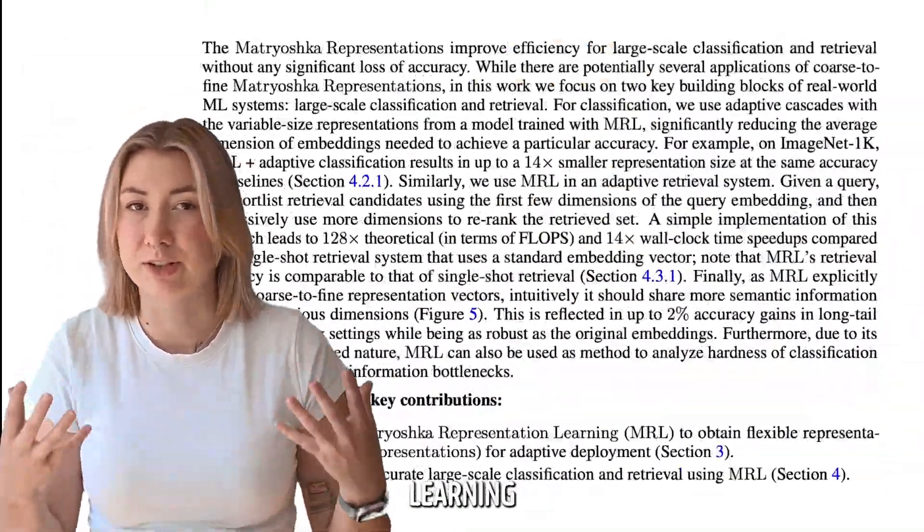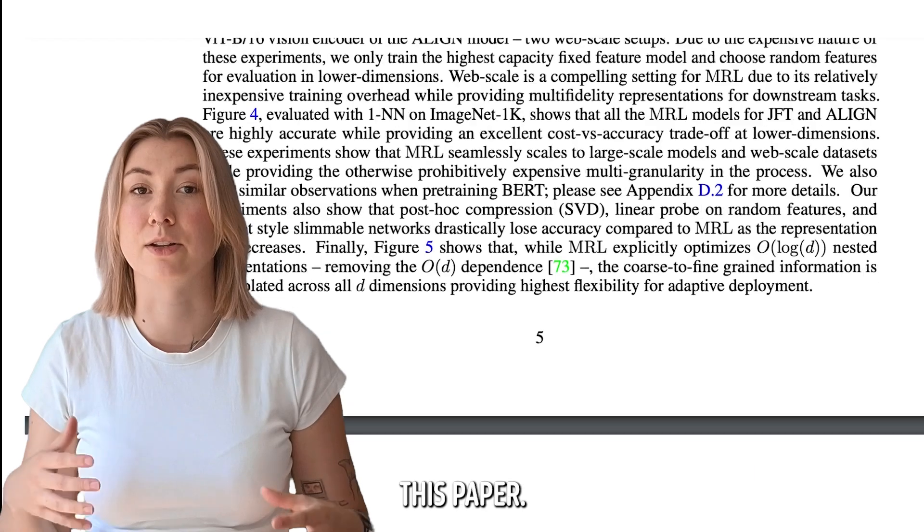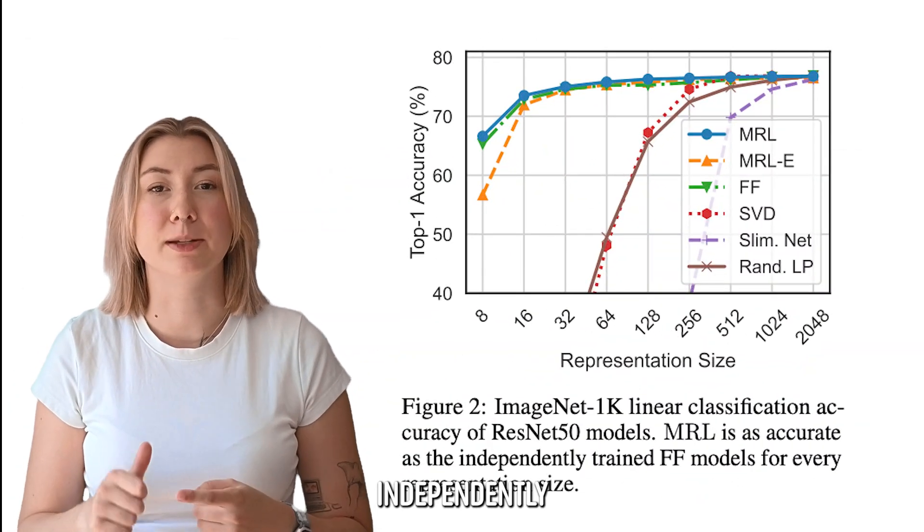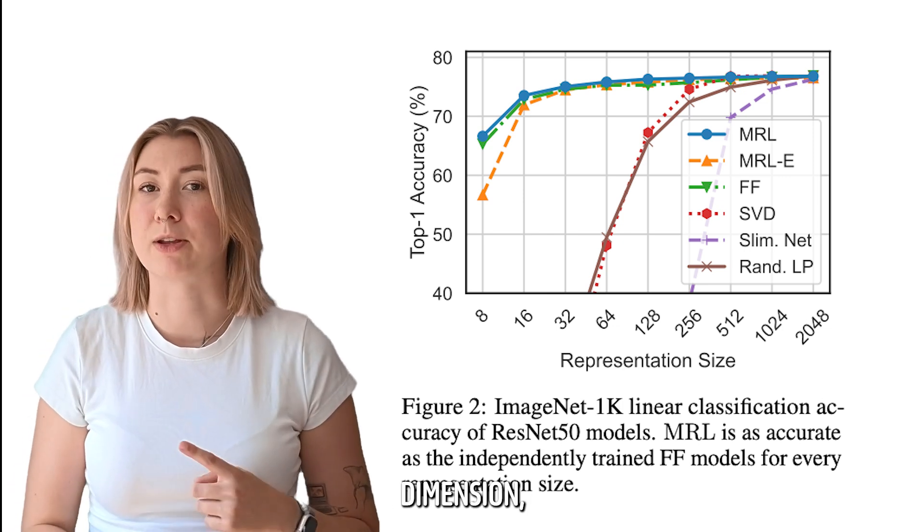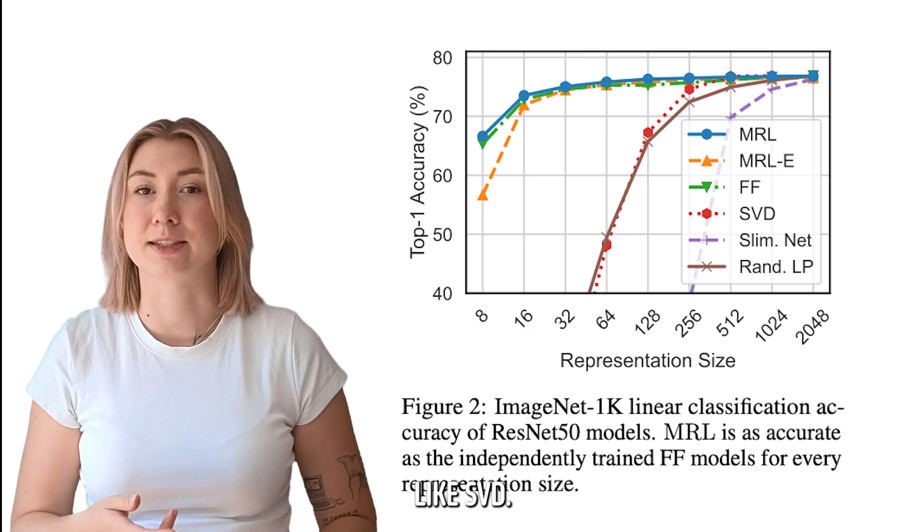Also, matrioshka representation learning ends up performing really well on the classification and retrieval tasks they did in this paper. For the image classification tasks, MRL is on par with the independently trained FF model, which is a new model specifically trained for each dimension size and way better than dimensionality reduction techniques like SVD.